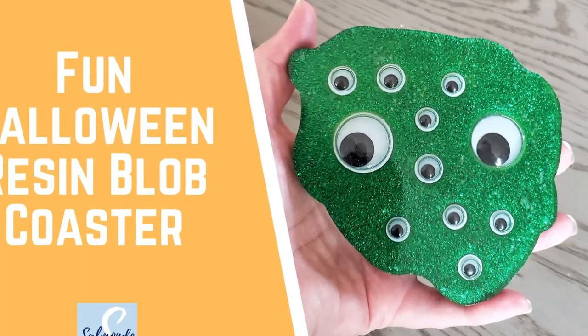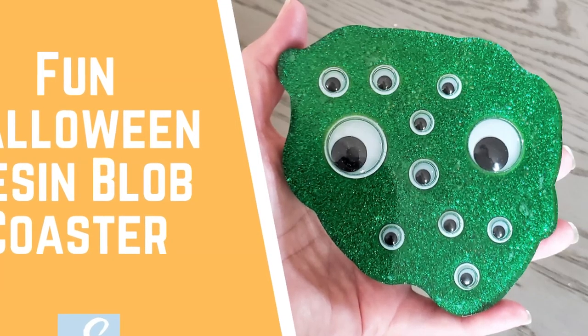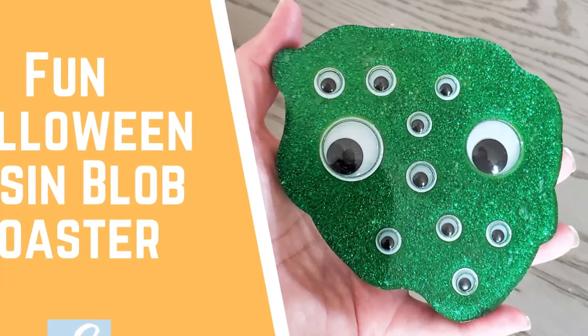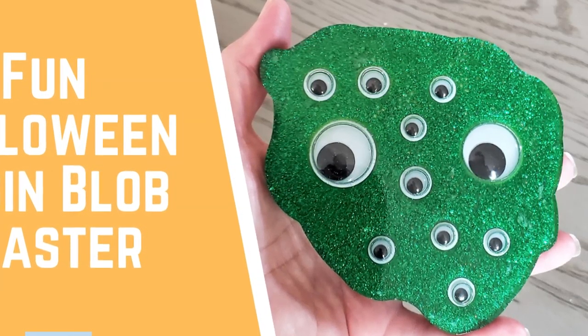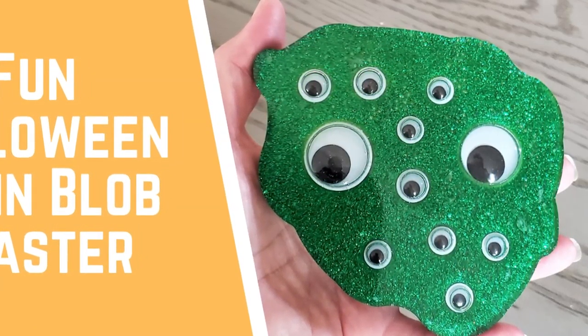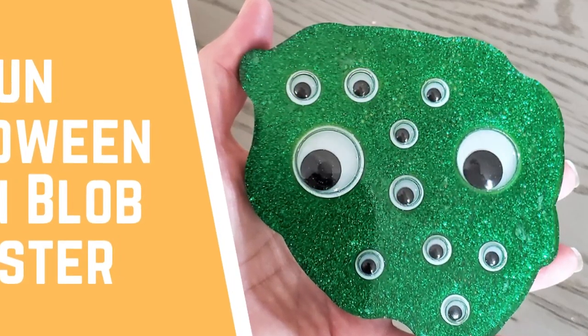Now, I wanted to make something using resin, so I jumped on Pinterest and found lots of great Halloween ideas, one of them being a coaster that had some little wiggle eyes in it. I thought it was adorable and I wanted to make one for myself, but I added several of my own ideas and came up with this friendly little blob coaster using googly eyes, resin, glitter, and a silicone mold.